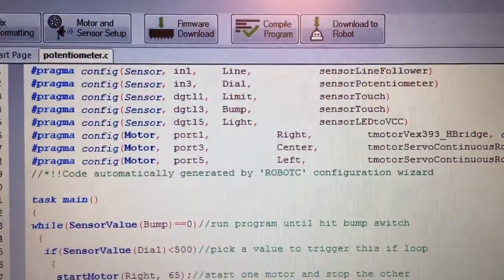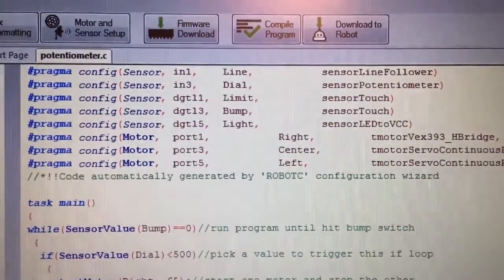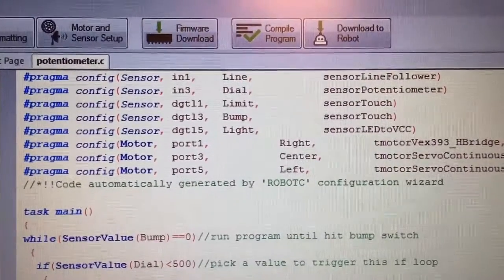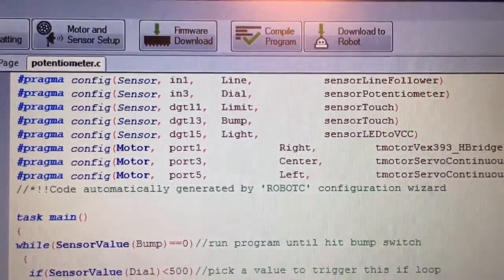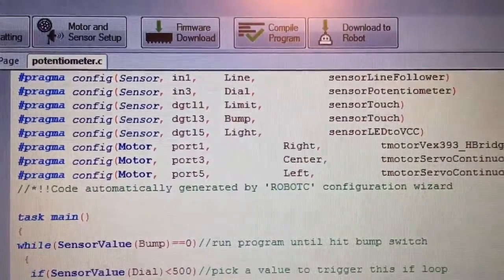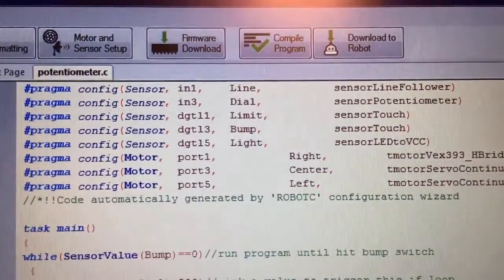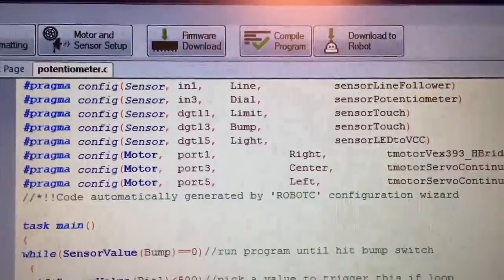There's all of our setup statements. There's everything we've got on the board - the line follower. I call the potentiometer a dial. Call them whatever you want; they should make some sense. Limit, bump, light - we're not using most of that stuff. I just initialized everything.